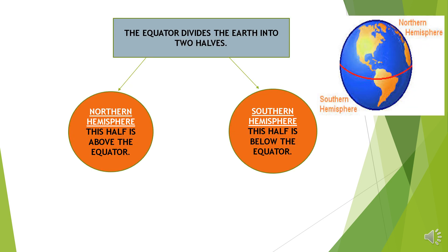The equator divides the earth into two halves. The upper portion is the northern hemisphere and the lower portion is the southern hemisphere. Northern hemisphere — this half is above the equator. Southern hemisphere — this half is below the equator.